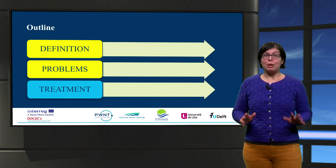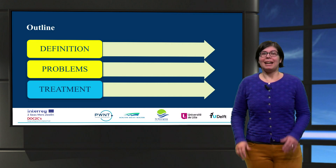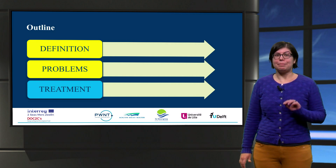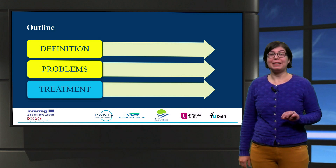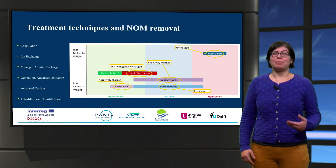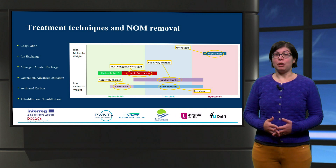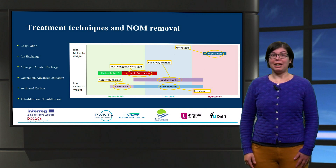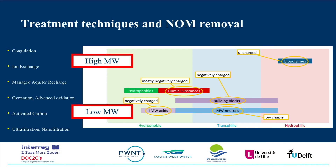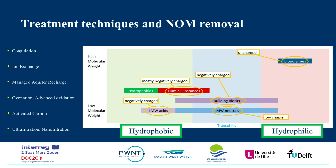Now we want to look at NOM removal treatment steps. We know that in water treatment, the problems are caused by different NOM fractions. With liquid chromatography organic carbon detection, dissolved NOM is divided into fractions according to their size on the vertical axis. As you can see in this picture, fractions can be more or less hydrophobic on the horizontal axis, and they have different charge. There are different techniques that remove NOM, and each technique has a different NOM target.